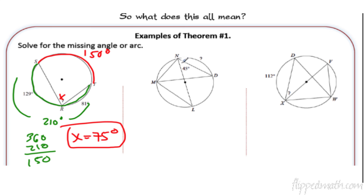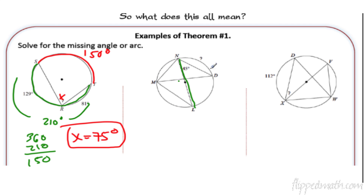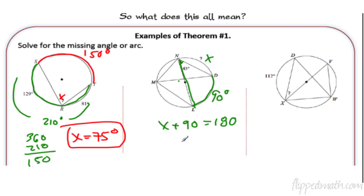We have a diameter — that cuts the circle in half. So I'm just dealing with half the circle here, and that's 180 degrees total. I know that because the angle is half of the measure of the intercepted arc. So if this is 45, that means the arc must have been 90 because the angle is half. And if the entire semicircle is 180, let's call that x — x plus 90 has to equal 180, so we're going to get x equals 90.